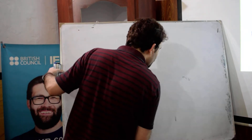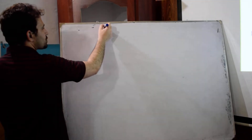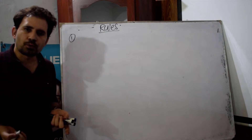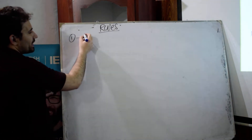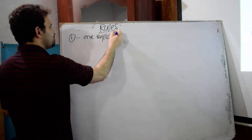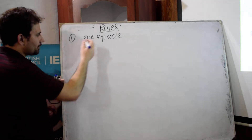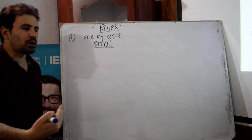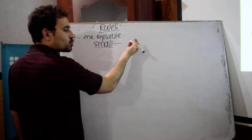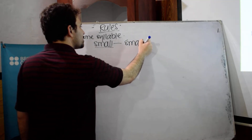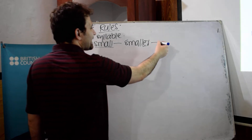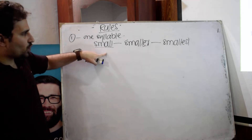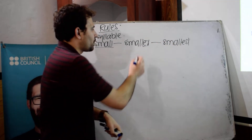Now let's talk about the rules to change from positive to comparative and from comparative to superlative. Rule number one: if an adjective has one syllable — for example, 'small' — to change from positive to comparative, we add 'er': smaller. To change to superlative, we add 'est': smallest. So for one-syllable adjectives, add 'er' for comparative and 'est' for superlative.